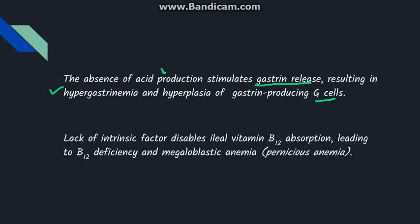Achlorhydria and hypergastrinemia are key characteristics of autoimmune gastritis. Lack of intrinsic factor disables vitamin B12 absorption, leading to vitamin B12 deficiency. Vitamin B12 deficiency in turn leads to megaloblastic anemia.